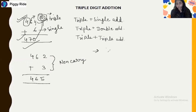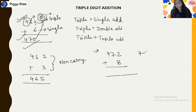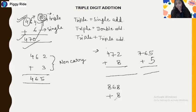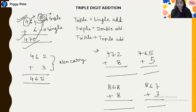Let's solve more examples. We have 472 plus 8, then 765 plus 5, then 868 plus 8, and 867 plus 3.